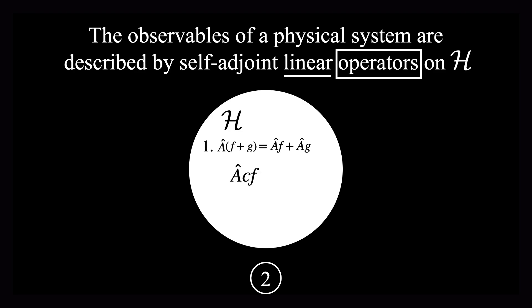The second requirement is that if you take a function, multiply it by some scalar, and then apply the operator, this must be equal to applying the operator first and then multiplying by some scalar. If both of these requirements are satisfied, then we say that the operator A is linear. Otherwise, it is non-linear.